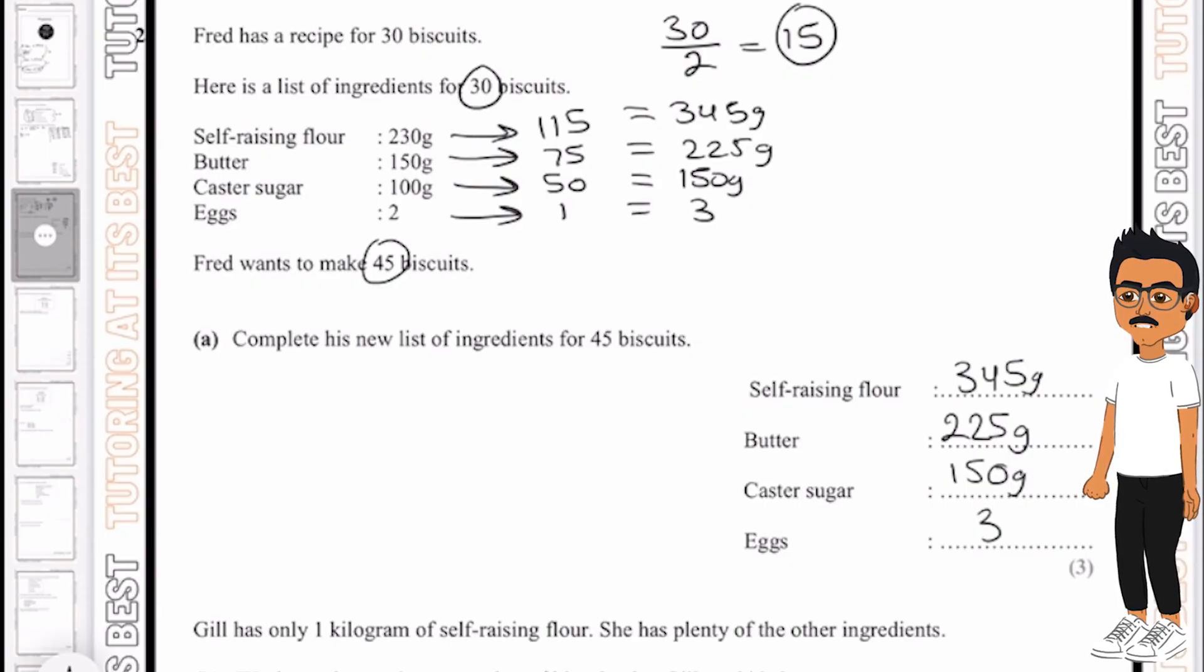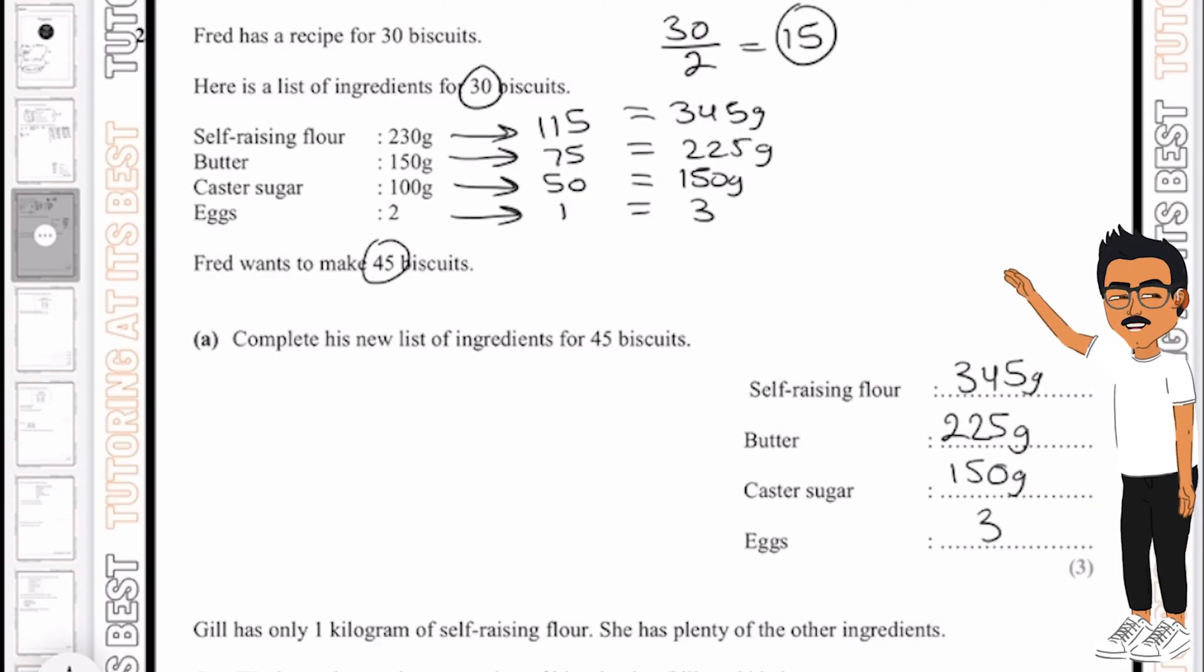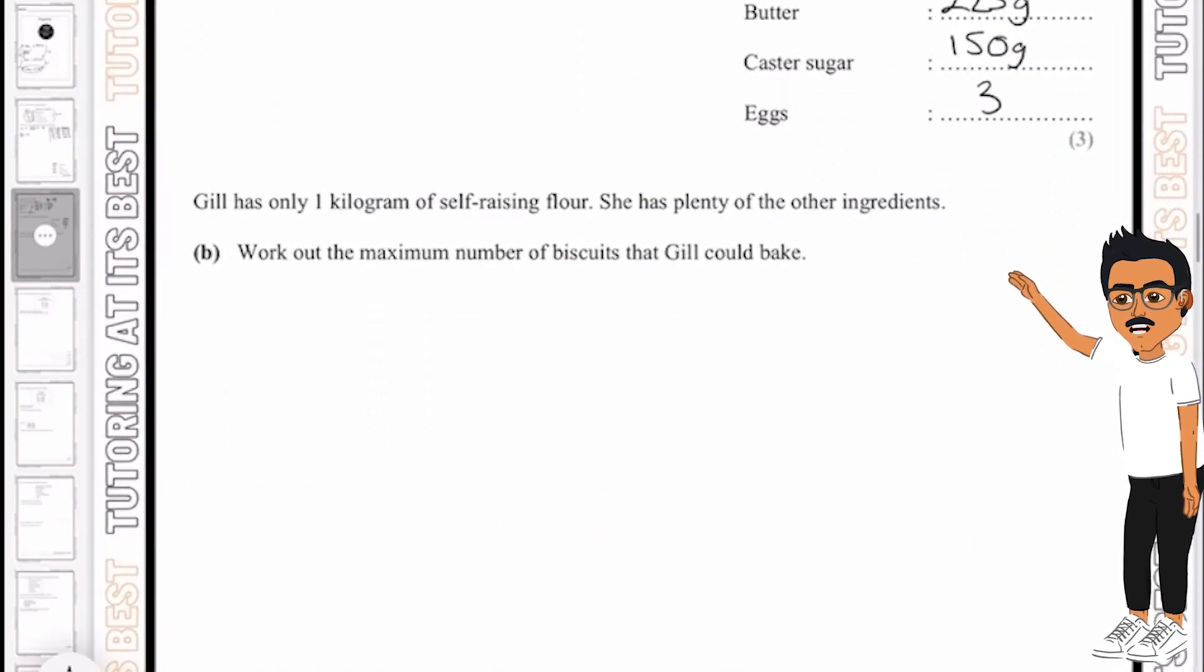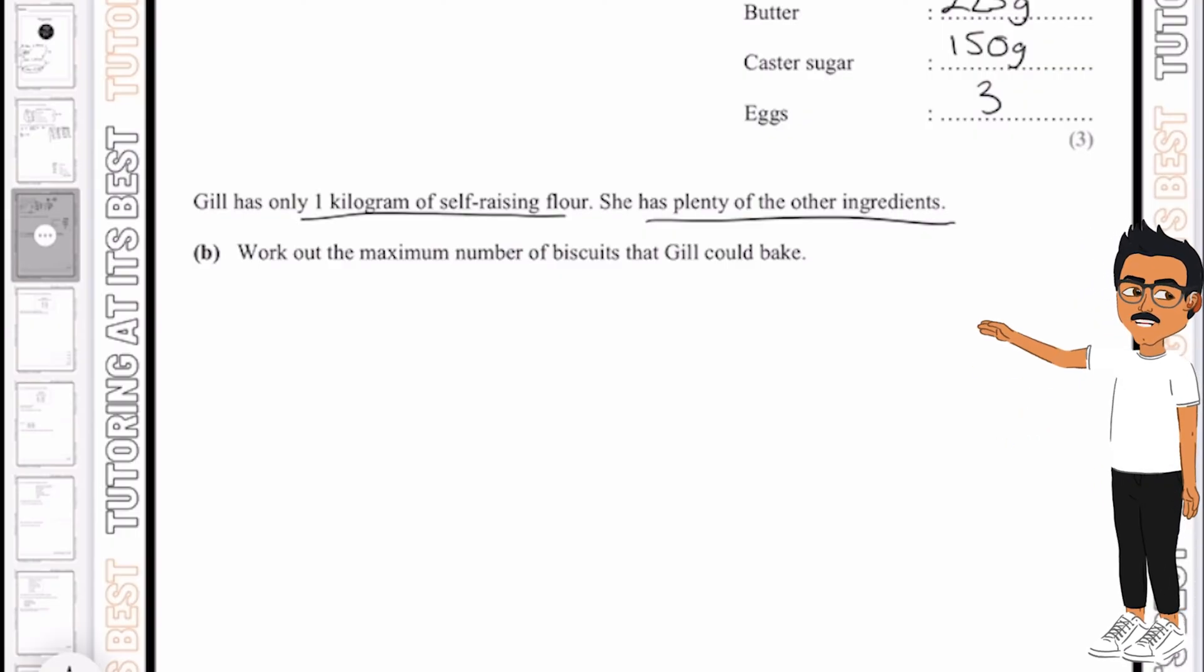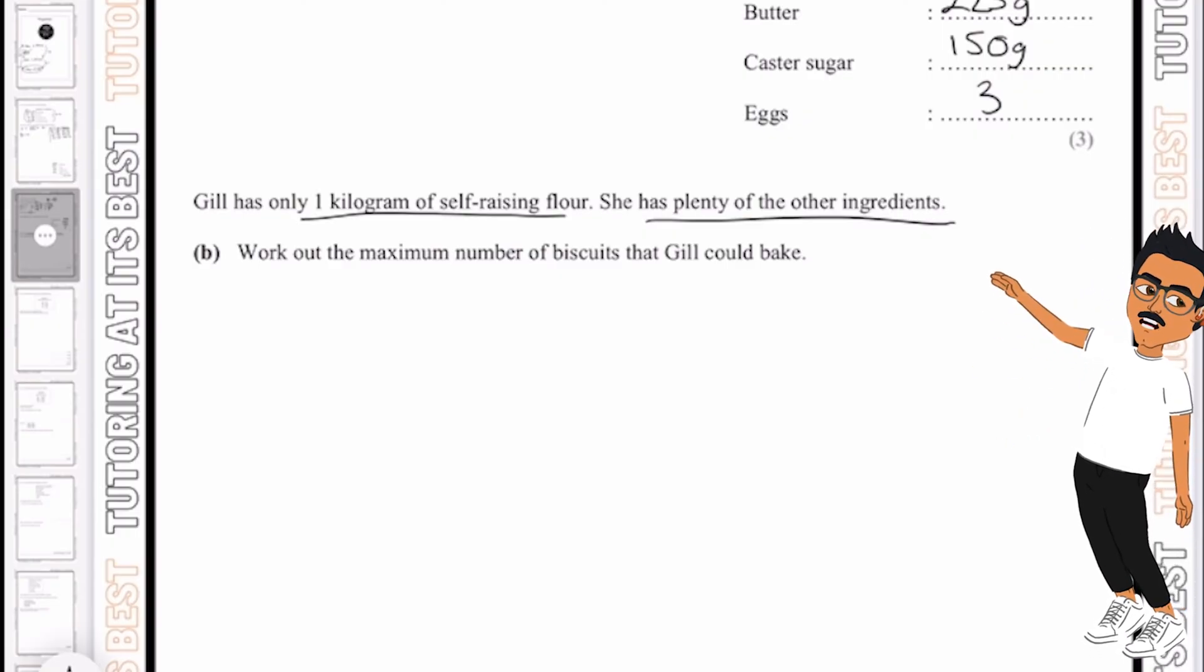And there we go. So I hope you can see how I'm breaking this down. I'm finding out the multiplier as well as finding out a more simpler way in which I can calculate what they're requesting. But then it mentions that Gill only has 1 kg of self-raising flour and she has plenty of the other ingredients. So work out the maximum number of biscuits that Gill could bake.